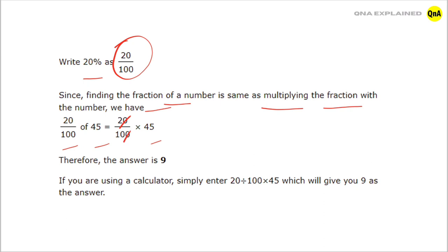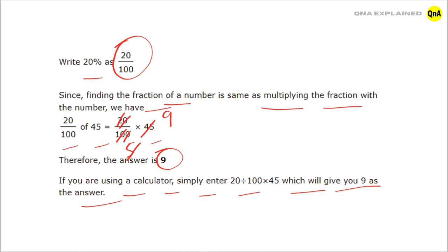First, cancel out the zeros. 2 fives are 10, and 5 nines are 45. So the answer is 9. If you are using a calculator, simply enter 20 divided by 100 into 45, which will give you 9 as the answer.